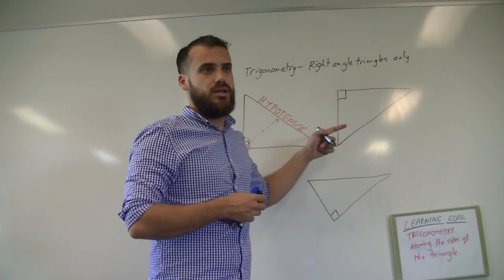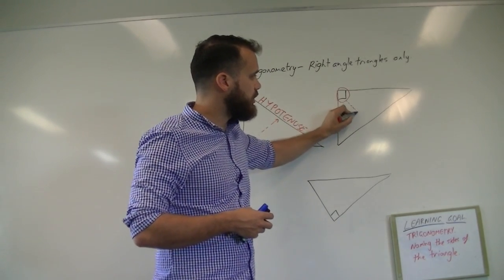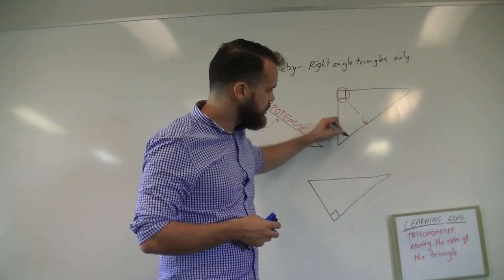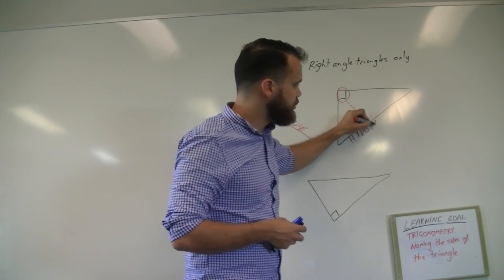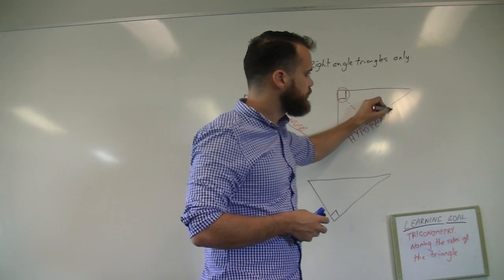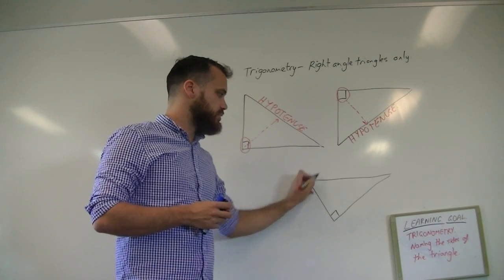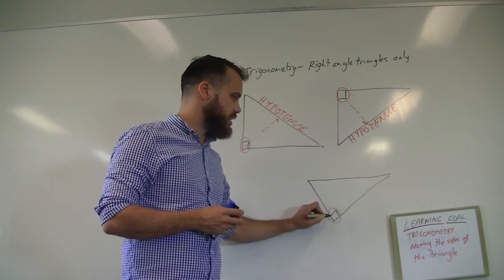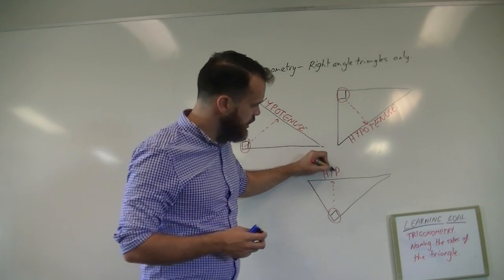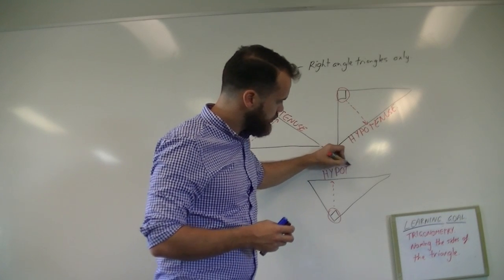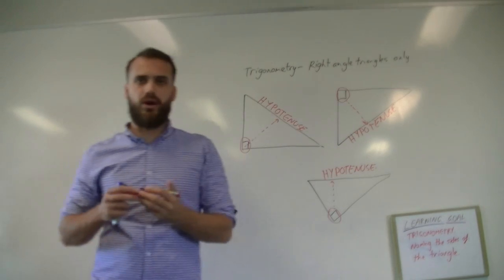Same procedure for the other triangles. Look at the right angle, draw a little arrow across, and that's going to be our hypotenuse. And finally on the last one, start at the right angle, draw an arrow across, and there is your hypotenuse.